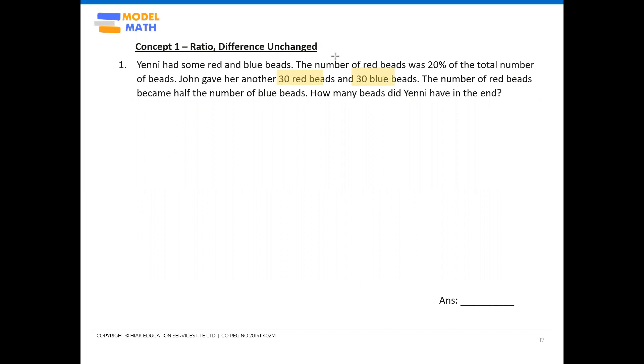So for this question, we can consider recording down a before, change, after table because I have 20% which I can conveniently translate to a ratio in the before part. And in the end, the number of red beads became half the blue beads, so half also I can write as a ratio. Then we can see whether there's a common base that we can work on.